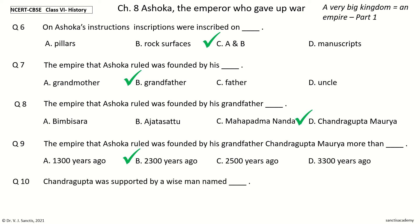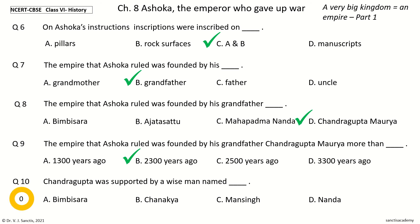Question 10: Chandragupta was supported by a wise man named — blank. The options are: Bimbisara, Chanakya, Man Singh, Nanda. The answer is Chanakya. So Chandragupta was supported by a wise man named Chanakya.